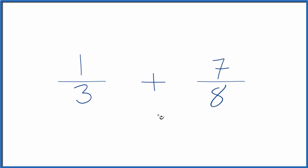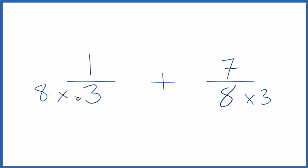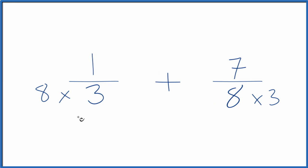Probably the easiest way to do this would be to multiply three times eight. That would give us 24. Then over here, eight times three, that would also give us 24 and we'd have the same denominators. But we can't just multiply the denominators. We also have to multiply the numerators.